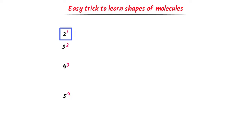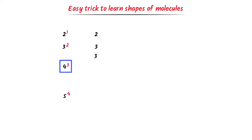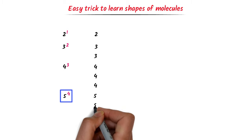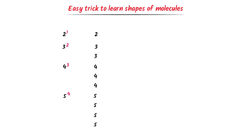This power of 1 on 2 means I have to write 1 times 2. This power of 2 on 3 means I have to write 2 times 3. This power of 3 on 4 means I have to write 3 times 4. This power of 4 on 5 means I have to write 4 times 5. Just remember that the power of each digit shows its frequency.